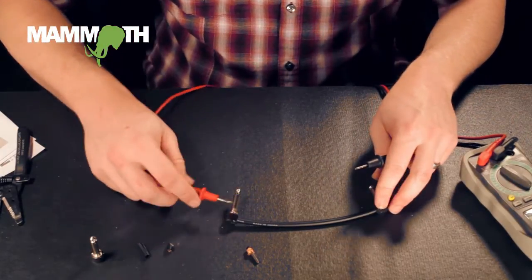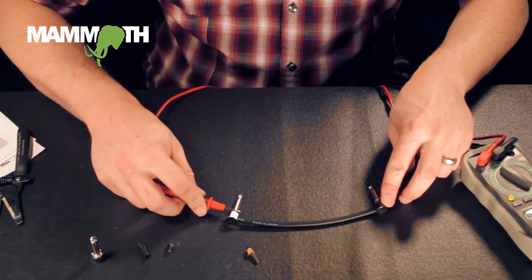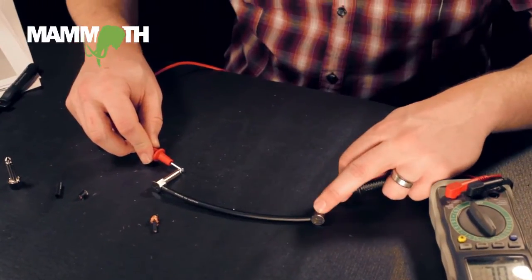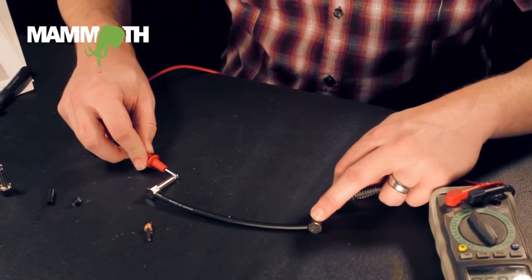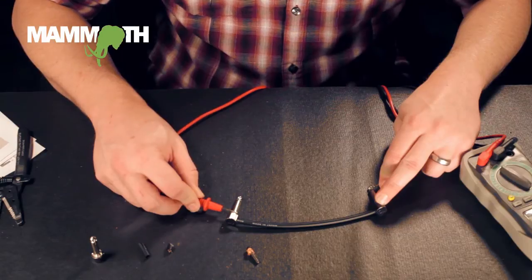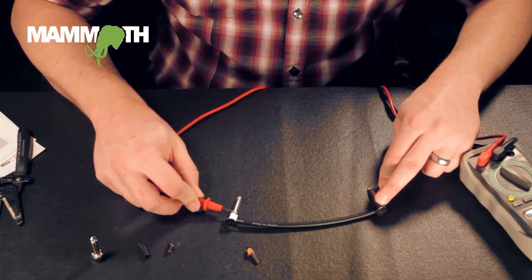We're going to test from our two shields. We have a good ground connection and our two tips. You have a good tip connection. And then you want to test from the tip to the shield, and you don't want any connection in there.